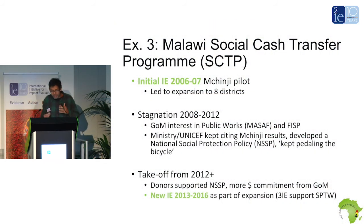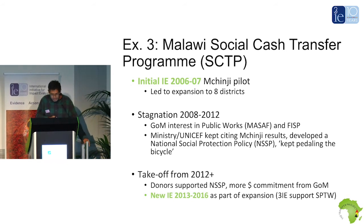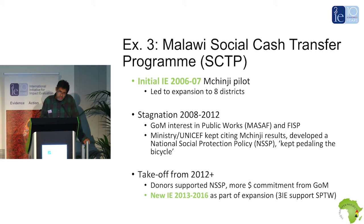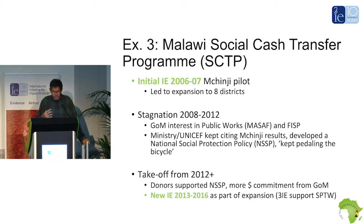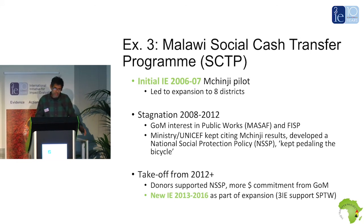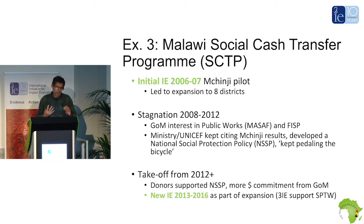Let's move to the Malawi case. There was an initial evaluation in 2006–07 when the cash transfer was just piloted. Based on those initial results, there was a minor expansion into about eight new districts. However, in the period of 2008 to 2012, there was really no expansion or dynamism — the program was basically just lying around, a period of stagnation. At that time, if you had asked us, we would have said the evaluation was a failure in the sense that there was no uptake of the evidence.